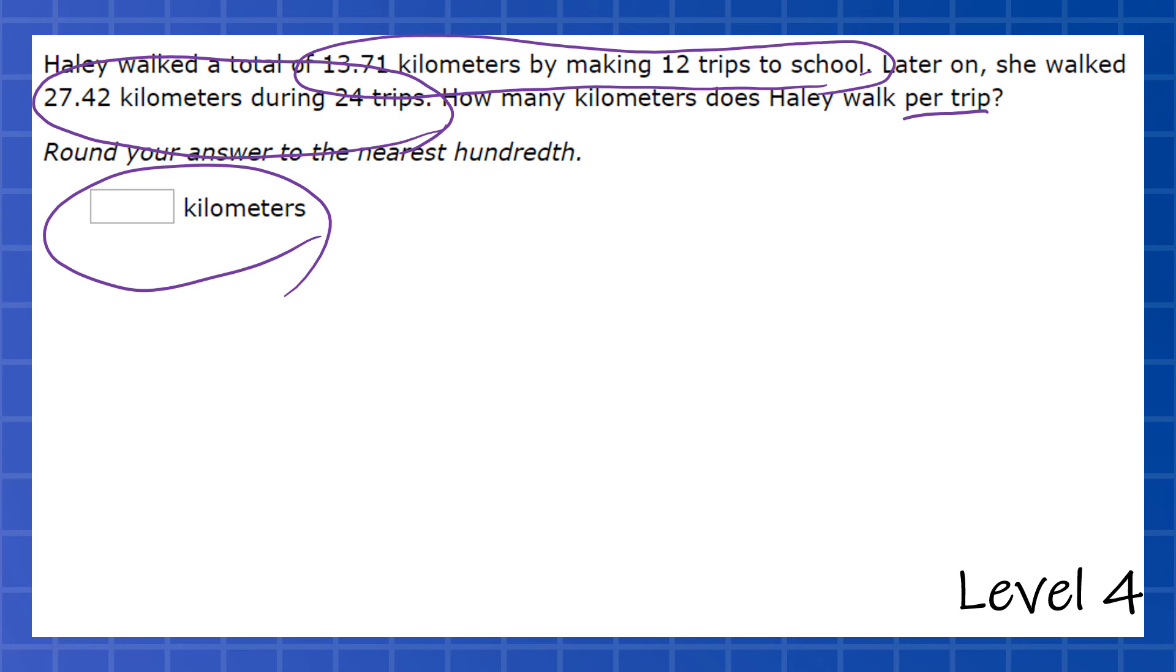If it only lists one thing, that's the thing that has to go on top. If it lists two things, it'll be like kilometers per trip. And you'll have to be able to tell miles per hour, put the miles on top, that sort of thing. So we're going to put the kilometers on top, 13.71 divided by 12.